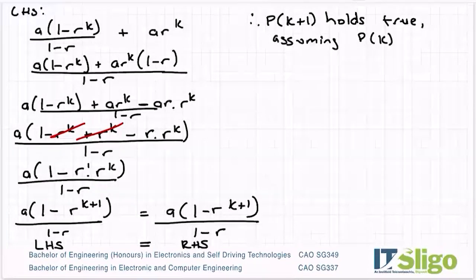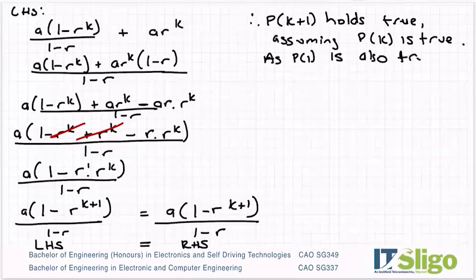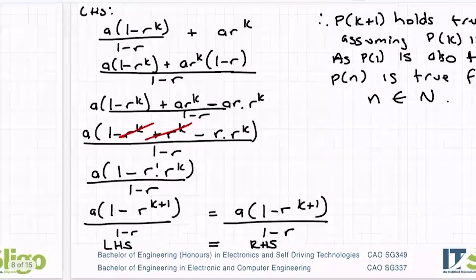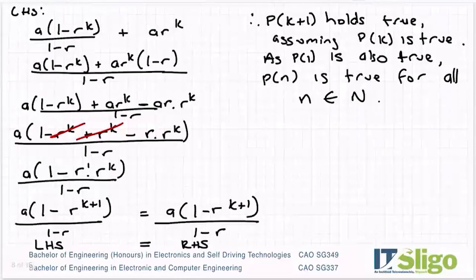Assuming p of k is true, as p of 1 is also true, p of n is true for all n an element of n. So proving the sum of a geometric series using proof by induction.